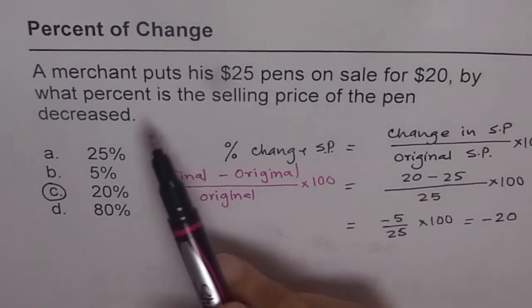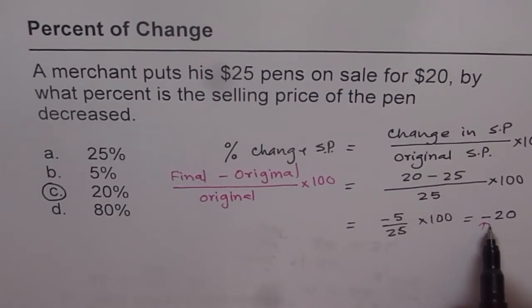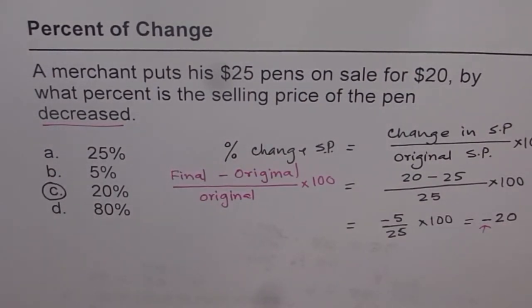Now it could have been increase, decrease, or so many different combinations. But a similar question, if you remember this part—final minus original over original times 100—you will always get them right. And this sign indicates whether it is increased or decreased. So negative indicates it decreased. That is what the question is asking for. Okay?